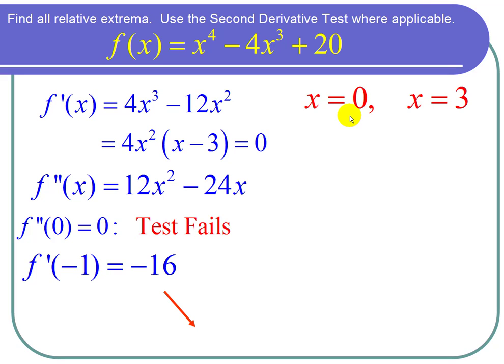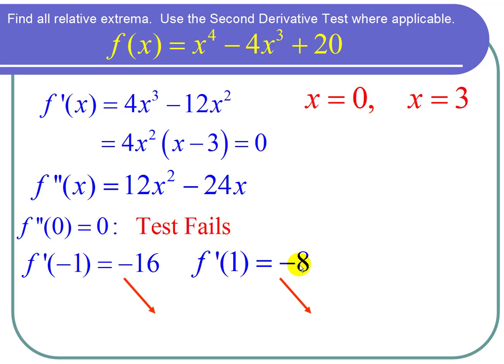If we have a function that is decreasing and then continues to decrease, we don't have a maximum, nor do we have a minimum, because maximum means you go up and down. Minimum you go down and up. So we have neither a max nor a min.